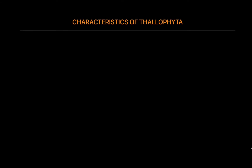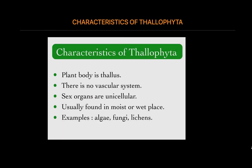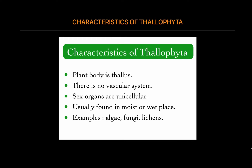Characteristics of Thalophyta: the plant body is a thallus. It is not differentiated into root, stem, and leaves. They are autotrophic in nature. They are usually found in moist or wet places, due to the absence of true roots and vascular tissue that is needed to transport water and minerals.